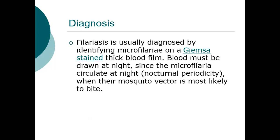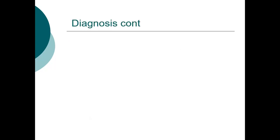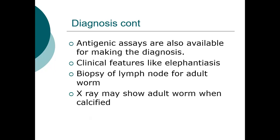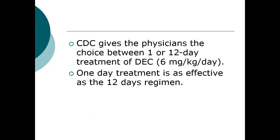Further investigations include a Giemsa stain test, which will come out positive for elephantiasis, and a polymerase chain reaction test, which will also come out positive. You can do an X-ray of the limbs or affected structures, which will reveal the presence of adult worms. A lymph biopsy will reveal the presence of filarial worms in the blood. For investigations, you need to mention five: one history, one physical, and the remaining three can be labs or radiological.